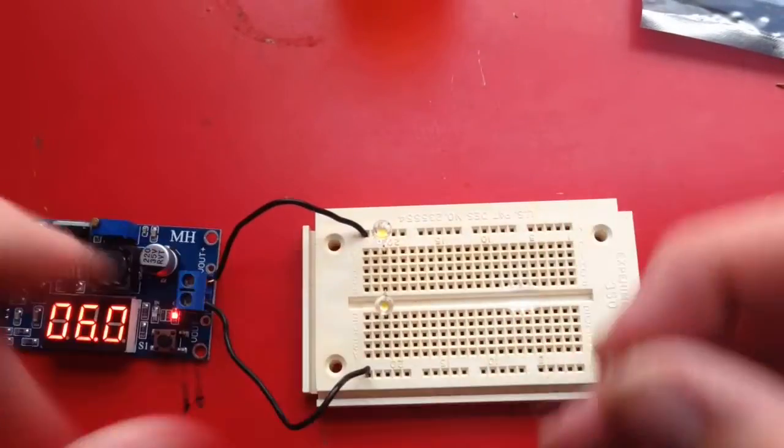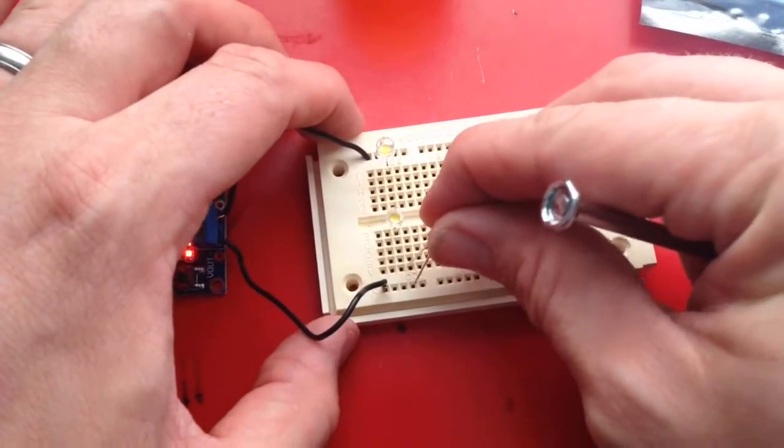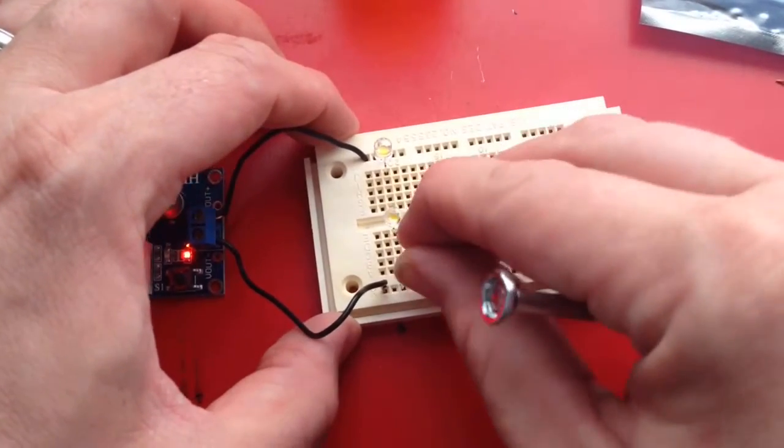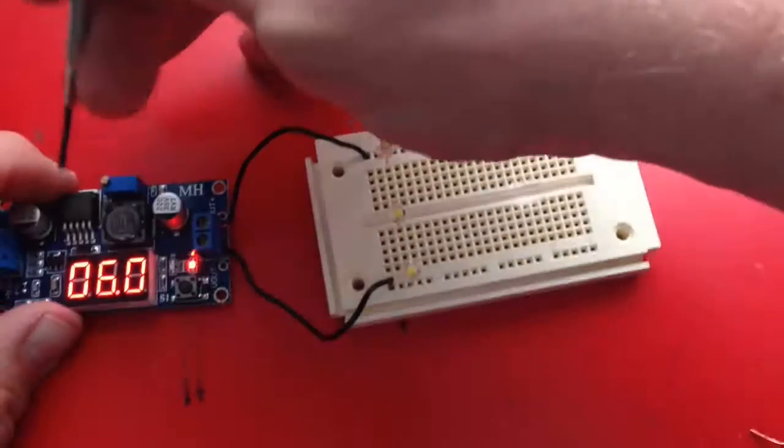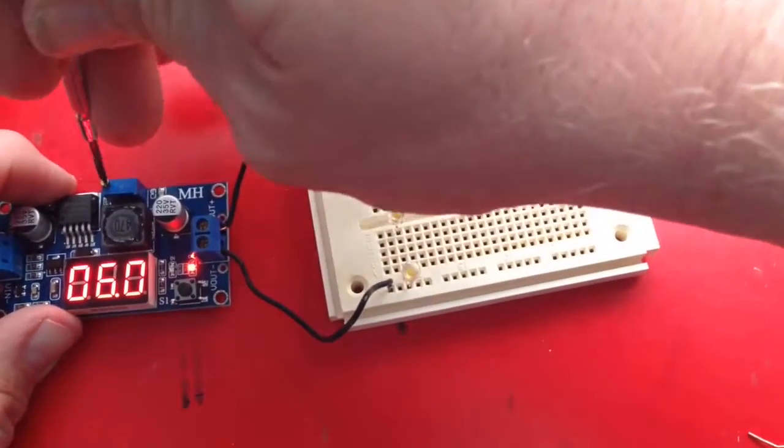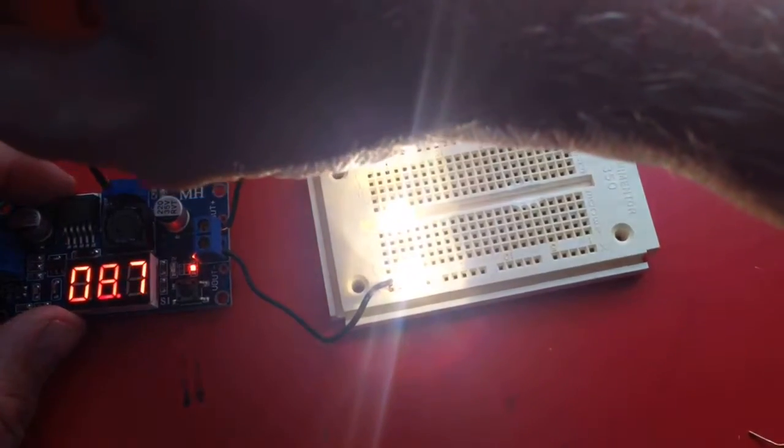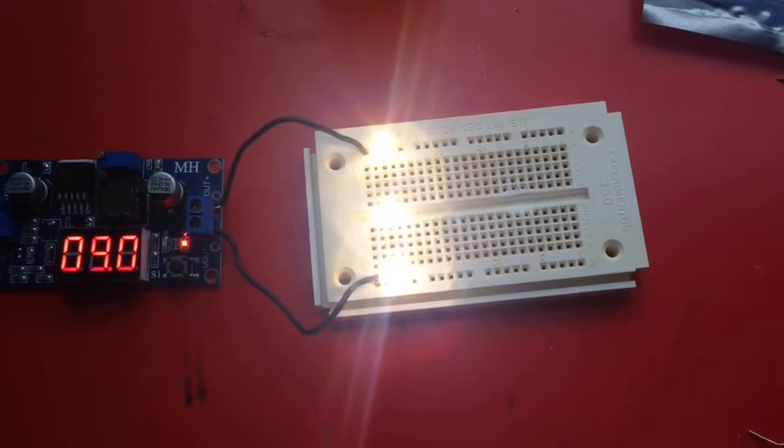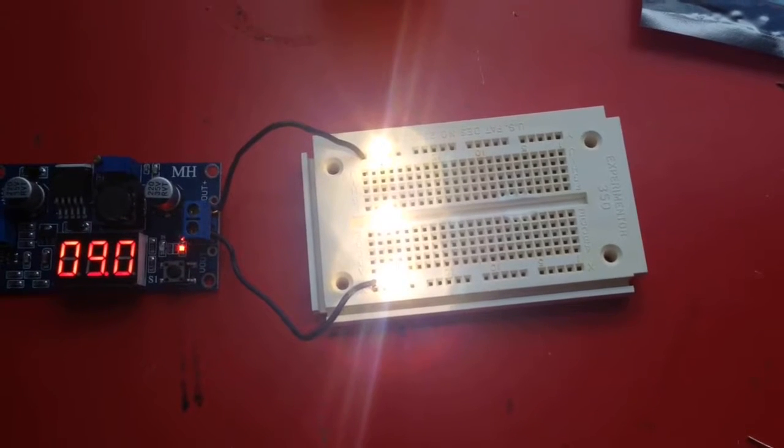So if I take this out and I put the third LED in, six volts isn't enough to light all three. So I actually have to raise the voltage to make it bright enough. And now I have nine volts to power three LEDs. Each one will take about three volts to light it up.